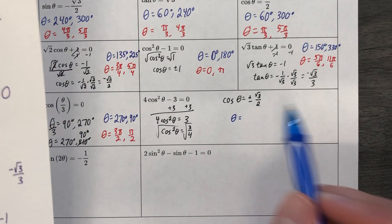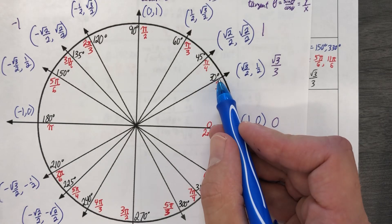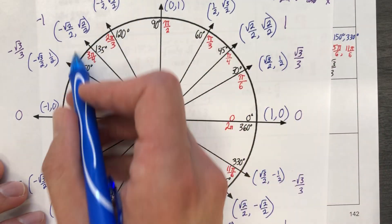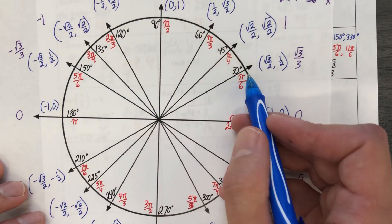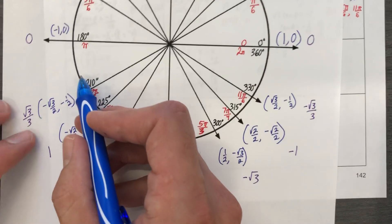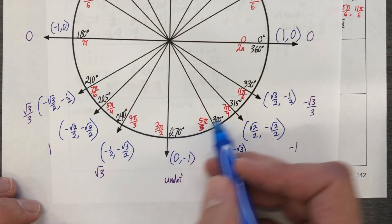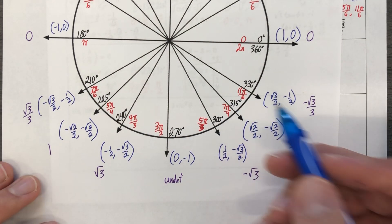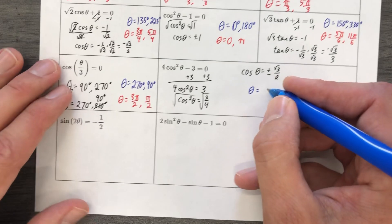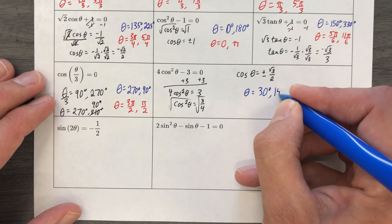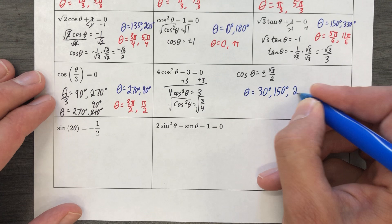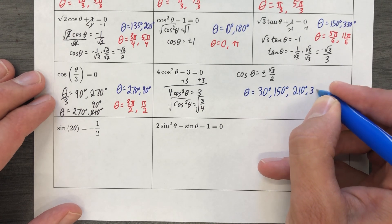Everywhere that the x value is square root of 3 over 2. Oh, there's one of them. And there's its negative. So 30, 150, there's another one, 210, 330. All right, let's write those down. 30, 150, 210, 330.